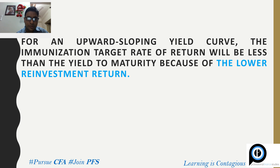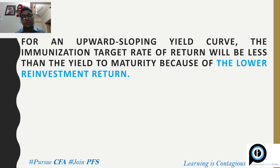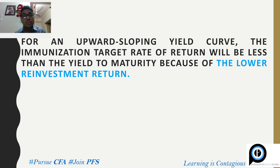Let's first state the key line. The assumption is that the yield curve is upward sloping, and also that the slope of the yield curve won't change. So the immunization target rate of return will be less than the yield to maturity because of the lower reinvestment return.